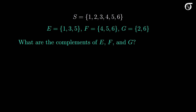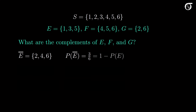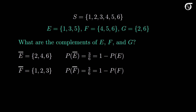What are the complements of events E, F, and G? E complement is everything in the sample space not in E, so it is the even numbers 2, 4, and 6. Its probability is 3 over 6, which equals 1 minus the probability of E. F complement is made up of the numbers less than or equal to 3 — sample points 1, 2, and 3 — with probability 3 over 6, equal to 1 minus the probability of F.